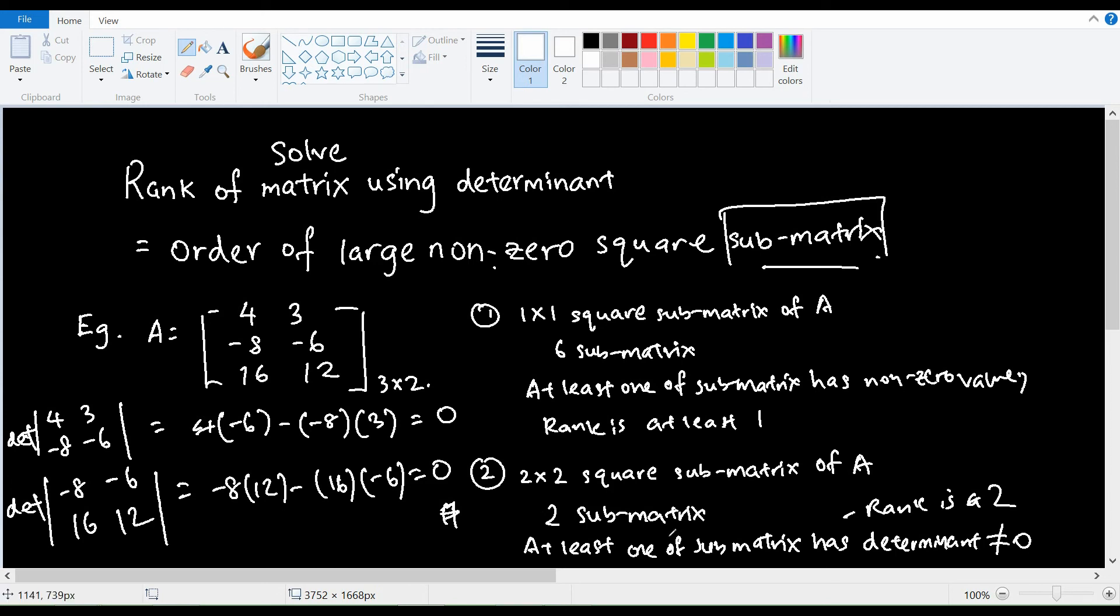and this gives me 0 as well. So the problem is that out of the two 2 by 2 square submatrices of A, none of them has a determinant of non-zero. Which means that my rank cannot be 2, and hence my rank is at most 1, because 1 is the order of the large non-zero square submatrix.